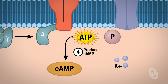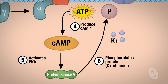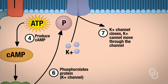Cyclic AMP then activates protein kinase A, or PKA. Protein kinase phosphorylates a protein — and specifically, when we activate protein kinase A, that is going to phosphorylate the potassium leak channel. So a channel is a protein, and we are phosphorylating specifically the leak channel. In response to that, this potassium leak channel closes. If it's closed, potassium cannot move through the channel.